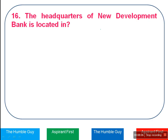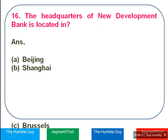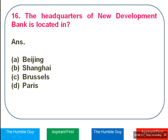The Headquarters of New Development Bank is located where? It is related to BRICS. The options are Beijing, Shanghai, Brussels, or Paris. The right answer is Option B — Shanghai.